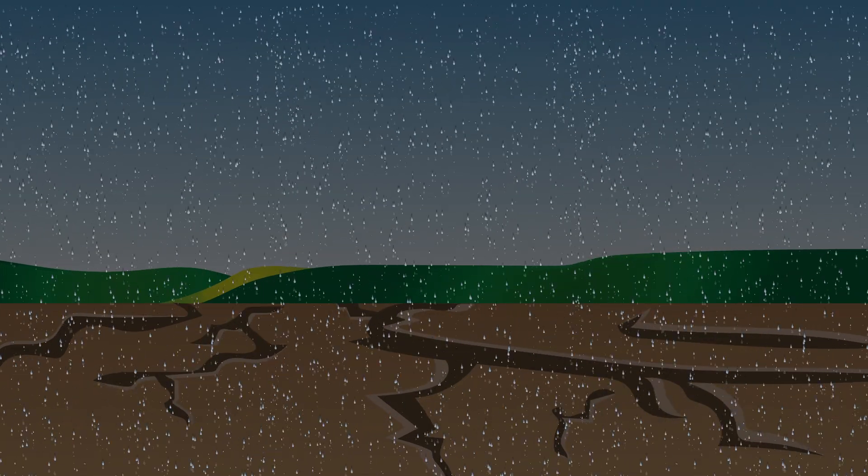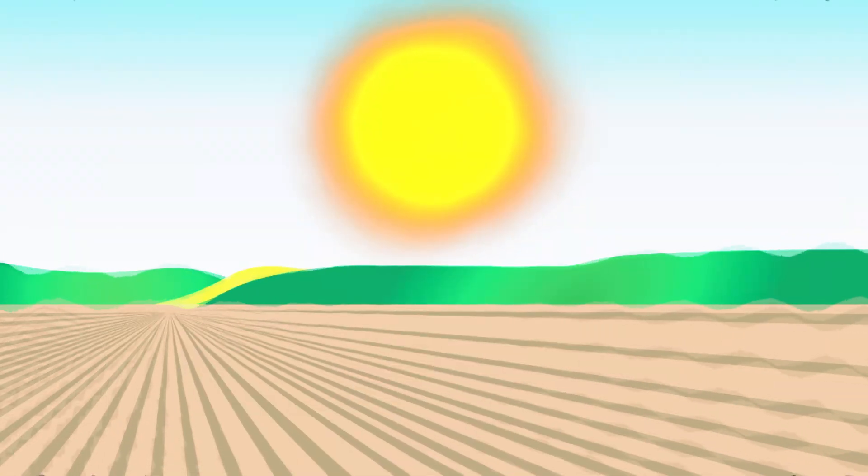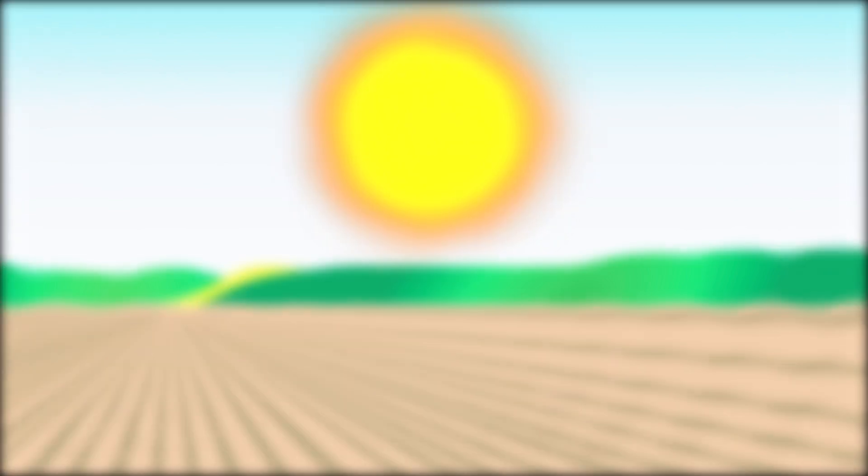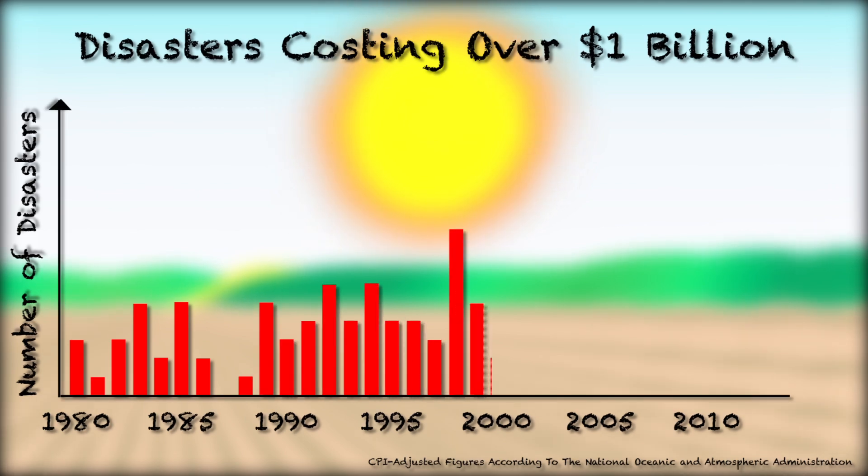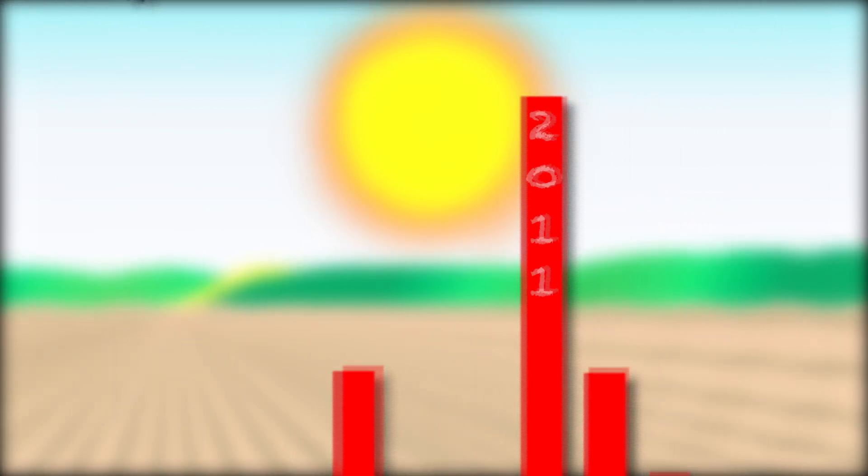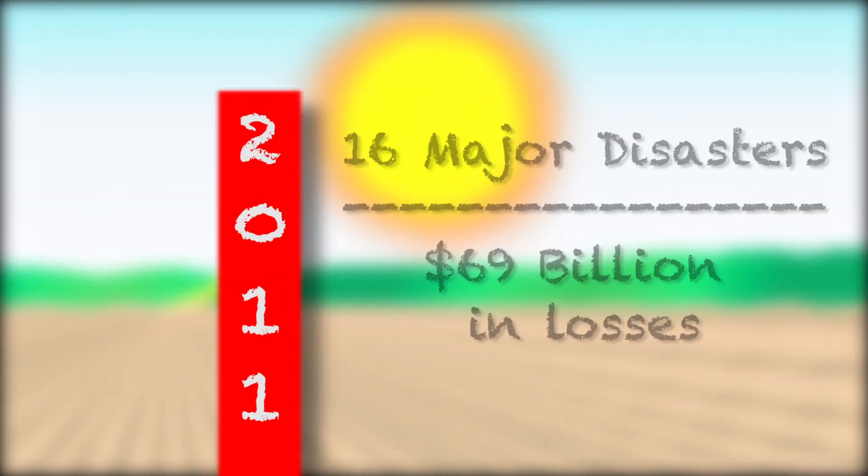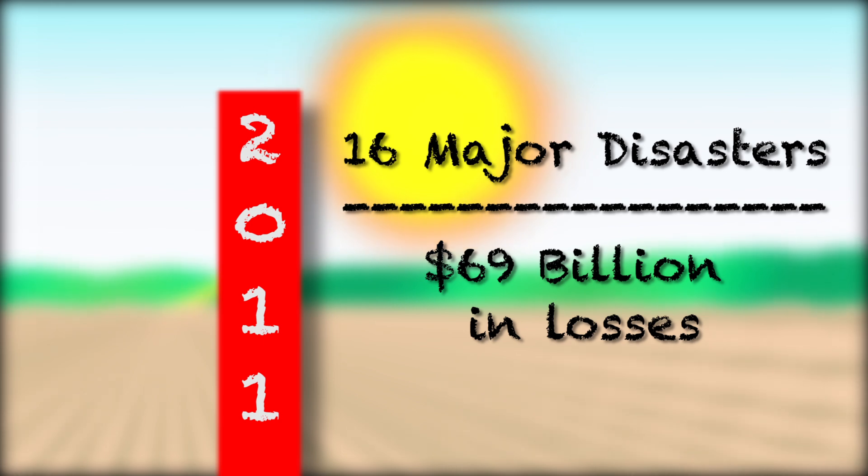All these pieces of the climate puzzle, floods, droughts, and heatwaves, can affect crops and livestock at key moments in their development, turning even a productive season into a disaster. We're already seeing a rise in extreme weather events. 2011 was the most disastrous year on record, with 16 extreme weather incidents that cost over $1 billion.